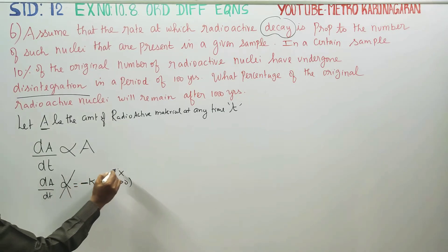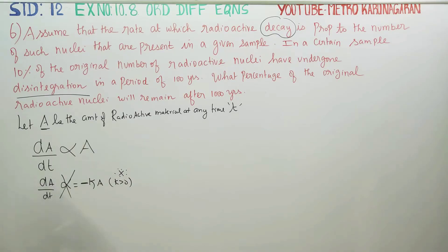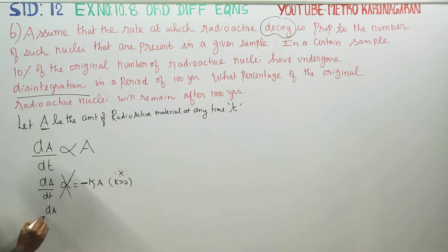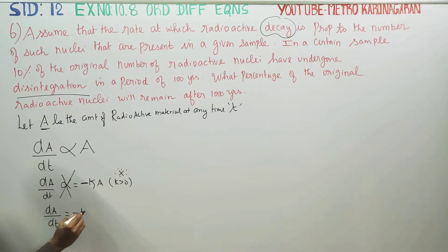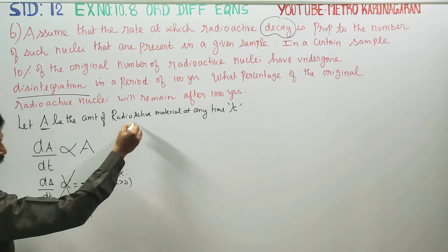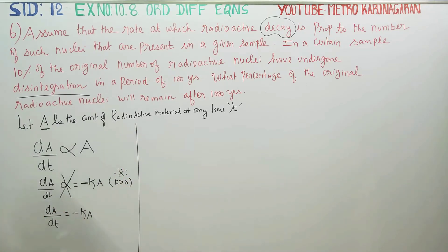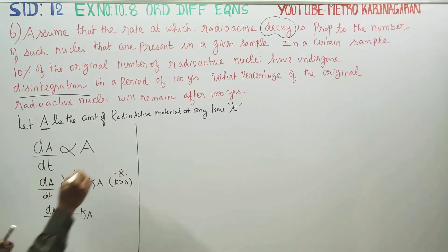Just for information: k is always positive. So our equation is dA/dt is equal to minus kA.